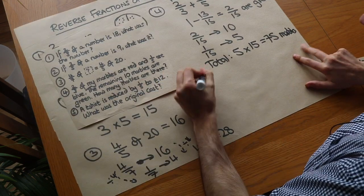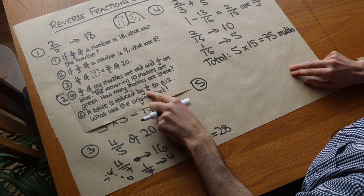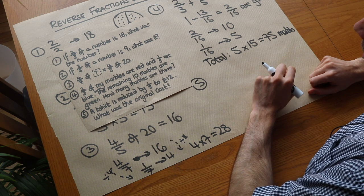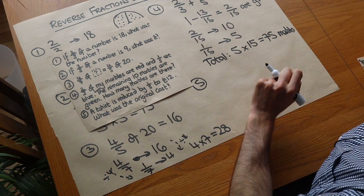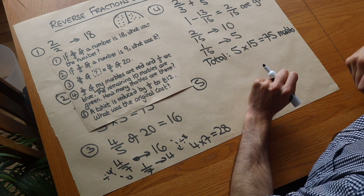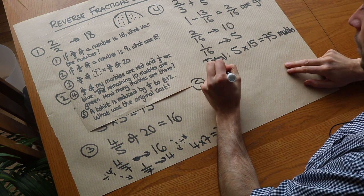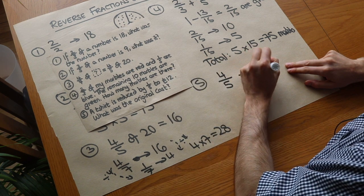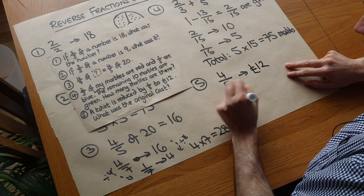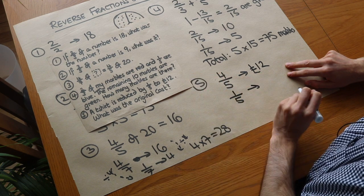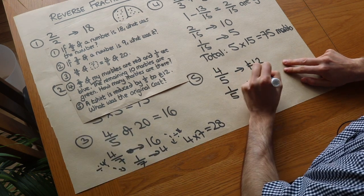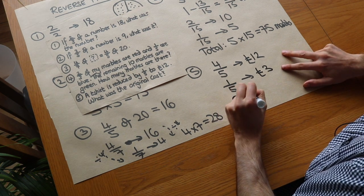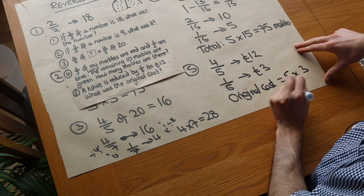What about the fifth one? A t-shirt is reduced by a fifth to £12. What was the original cost? If something was reduced by a fifth of its value, it's now at four-fifths of its value. So four-fifths of the cost was the sale price of £12. One-fifth is four times smaller, which is £3, and the total cost is five times three which is £15.